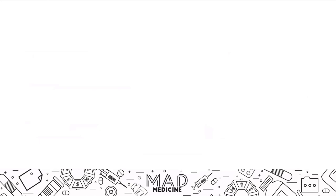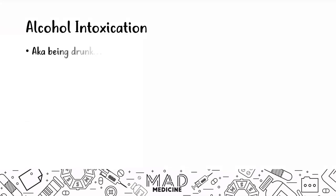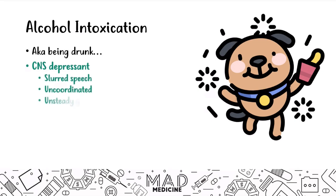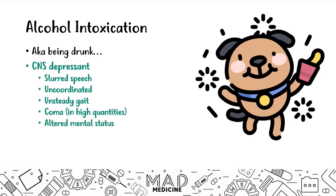Moving on, we're going to talk about alcohol intoxication, also known as being drunk. Alcohol intoxication acts as a CNS depressant and leads to slurred speech, being uncoordinated, and having an unsteady gait. A coma can also occur in very high quantities, as well as altered mental status.